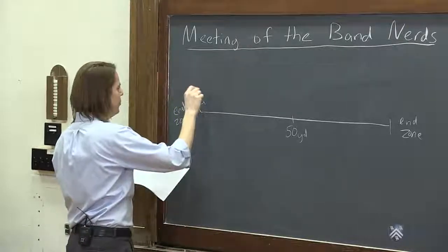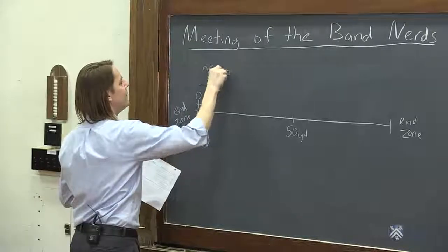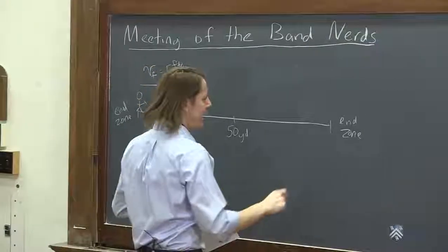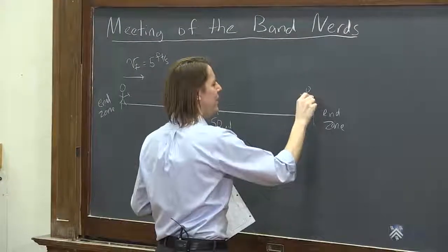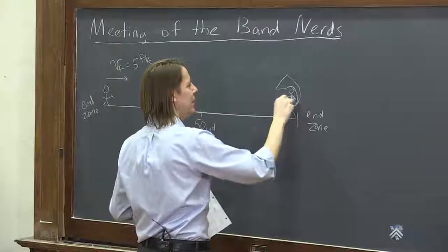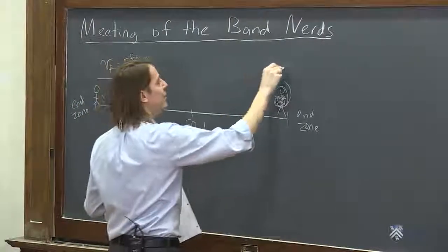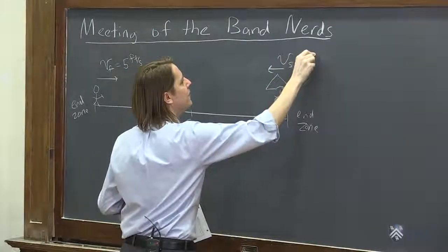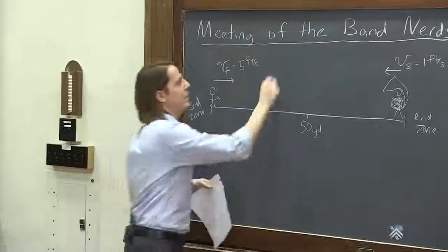So it is moving at VF, we'll call it V fast, of 5 feet per second. Yes, I am not using MKS for once here. And over here, we've got a marcher that is playing that big sousaphone thing that wraps around their body. So they're carrying that big heavy thing. So they're only moving that direction at V slow of one foot per second. And the question is, where do they meet?